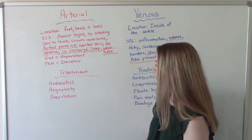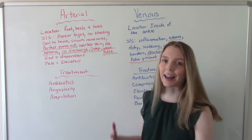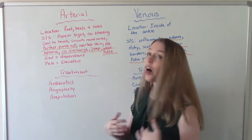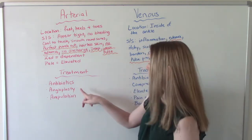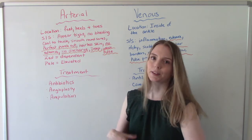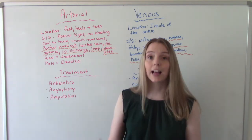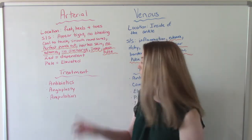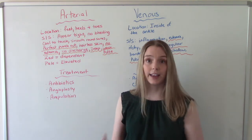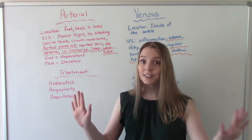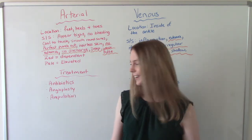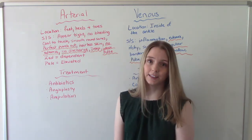When you go to do the pulses on your patient, they'll either be weak and thready or you won't be able to find them at all. Something notable with arterial ulcers: when dependent they appear quite red, but when we elevate the limb it becomes very pale. Treatments include antibiotics to prevent infection, angioplasty — a surgical procedure to help with blood flow in the area — and in extreme cases, amputation.